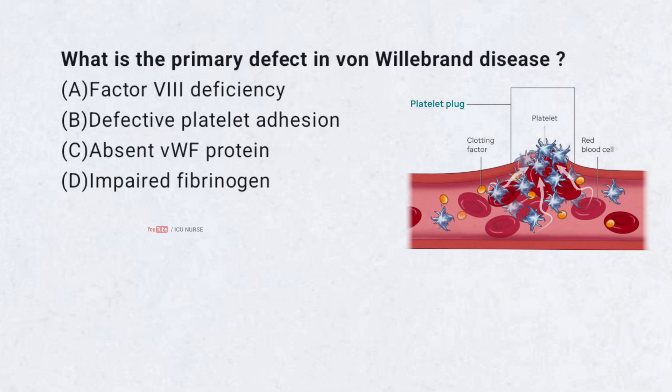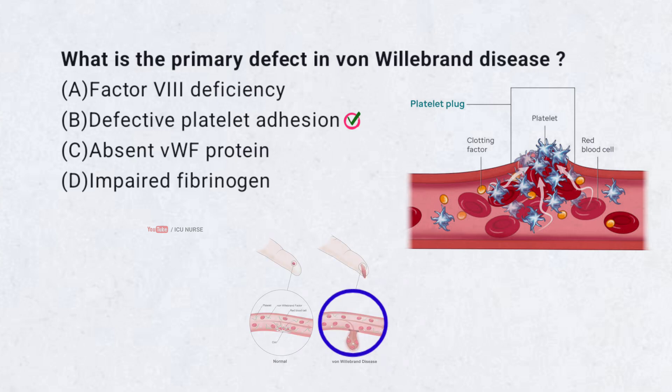What is the primary defect in von Willebrand disease? A. Factor 8 deficiency, B. Defective platelet adhesion, C. Absent VWF protein, D. Impaired fibrinogen. Correct answer: B. Defective platelet adhesion. Von Willebrand disease involves deficient or dysfunctional von Willebrand factor (VWF), which helps platelets stick to blood vessels.